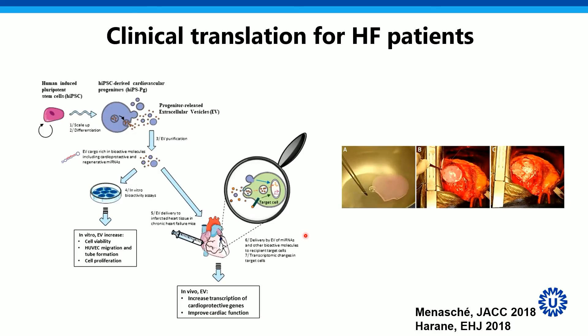In the meantime, the field moves forward. This is work from Menasché in Paris, where he's using an iPSC-derived progenitor cell, brings that into a patch, and shows effects in patients. These are approaches — this is a surgeon bringing patches to patients that have a big problem: heart failure. He sees some beneficial effects and suggests they're coming from the vesicles. So he's bringing these kind of applications now into the clinical arena, as we have done so far for cells as well. We have to see how that moves forward.